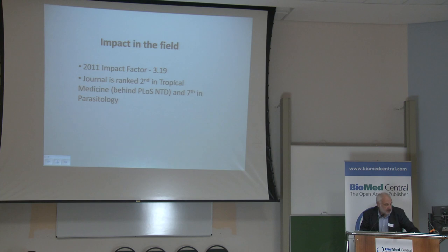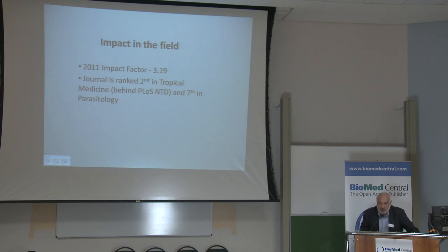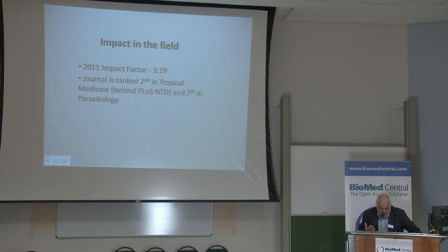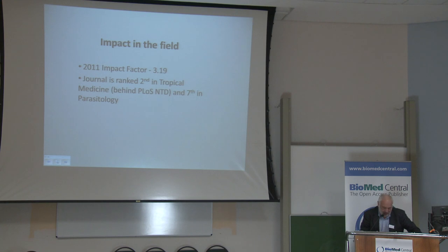The current impact factor is 3.19; last year it was a little bit more, 3.5. The journal is second in tropical medicine behind a PLOS journal, which publishes very little on malaria specifically. But competing with PLOS is an almost impossible task — PLOS is a publisher with enormous support and capacity that is difficult to compete with.